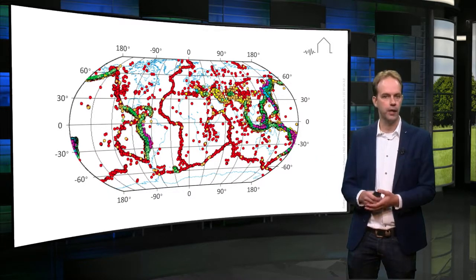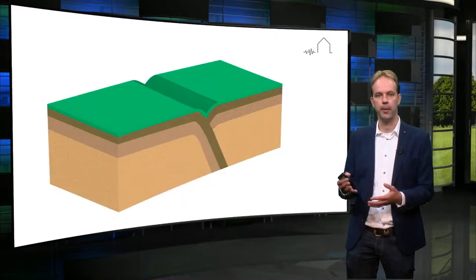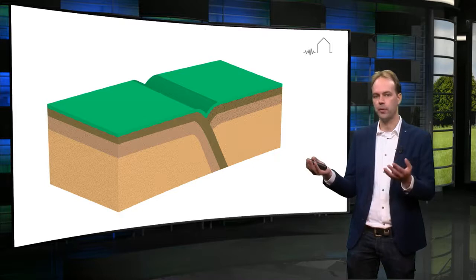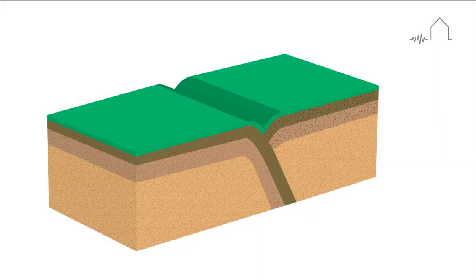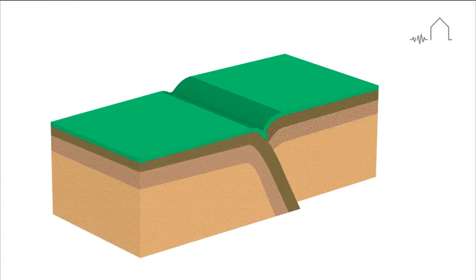So how does an earthquake actually happen? It is the consequence of gradual build-up of stress within the earth's crust. And when the build-up of stress has become larger than the strength of the rock, a sudden movement of two adjacent blocks occurs — they slip past one another.